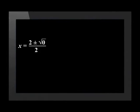Finally, if the discriminant is equal to 0, for example x equals 2 plus or minus the square root of 0, all over 2, then the roots of the equation will both be x equals 1. This means the two roots are equal to each other. Therefore, when the value under the square root is 0, the nature of the roots is equal.